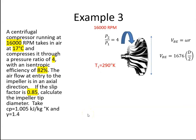Okay, so in our question, we're told that RPM is 16,000 RPM. The temperature at inlet is 17 degrees Celsius, well that converts to 290 degrees Kelvin.